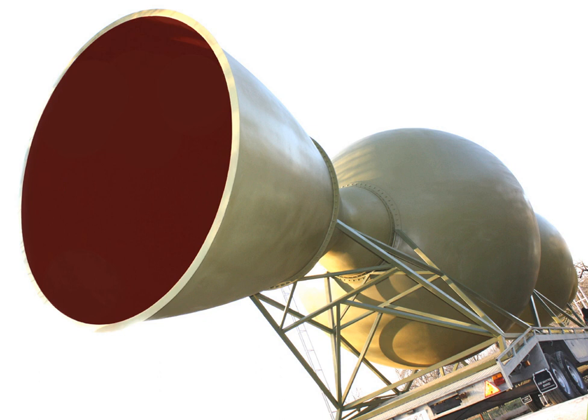The HAAS rocket was to be a three-stage rocket intended to be capable of placing 400 kilograms of payload into low Earth orbit.